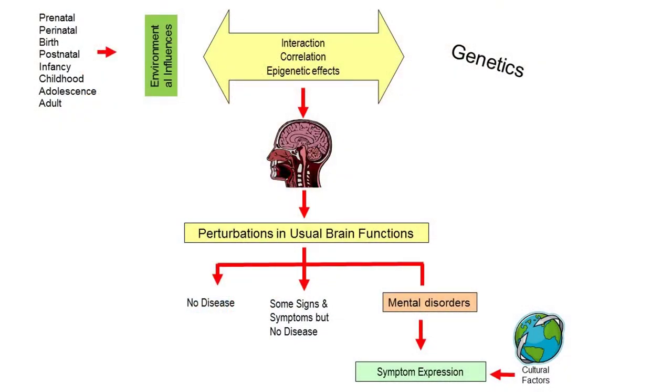We know that mental disorders are caused by a combination of genetic factors and environmental factors, and we know that both of them interact on the brain to create the probability that an individual will develop a mental disorder or may not. This creation of probability happens at the time of conception, when part of the new individual's DNA is inherited from the mother and part from the father. Frankly, it's the luck of the genetic dice — what parts you get from which parent.